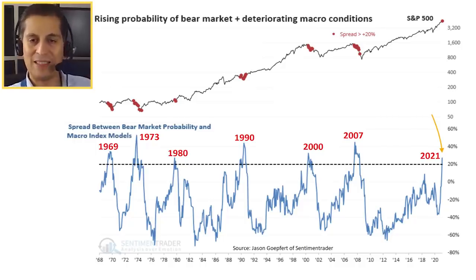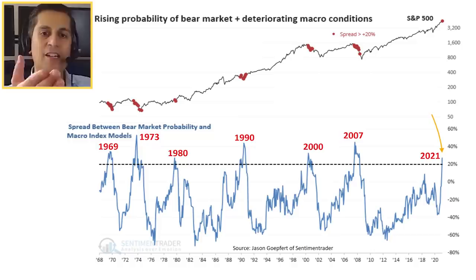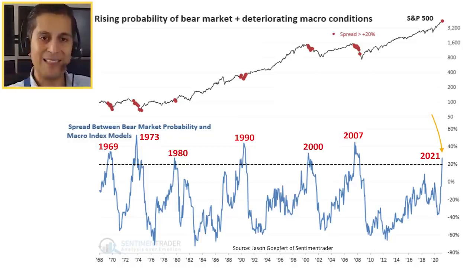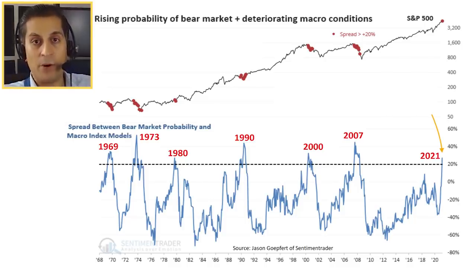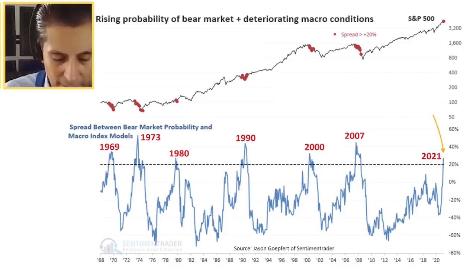We've seen before when this happened: 2007 — bear market occurred. 2000 — the dot-com bubble burst. 1990, the 1990s recession. 1980, 1973, 1969 — every time this model shows a signal going over 20%, it shows a rising probability of a bear market. From a technical, economic, and fundamentals perspective, everything is looking likely that — again, not this year, not 2021, but potentially the next couple of years — we could very well see a major top in not just the stock markets, but also Bitcoin as well.